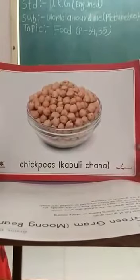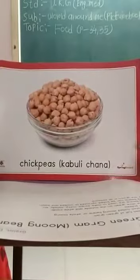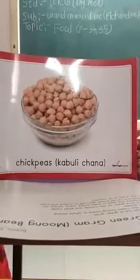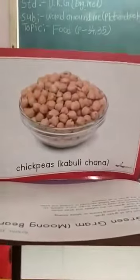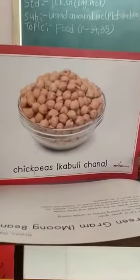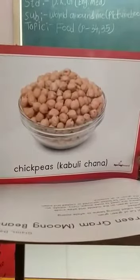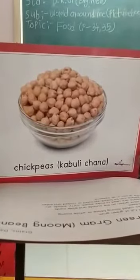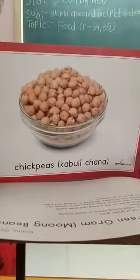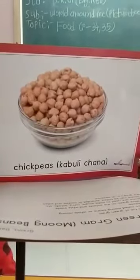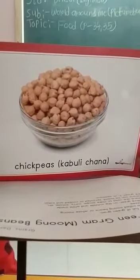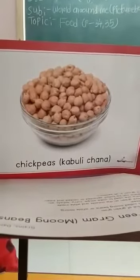These are chickpeas — Kabuli chana. These are also known as Bengal gram. These are pulses. Chickpeas can be boiled, sprouted, added to salads or added to curries.